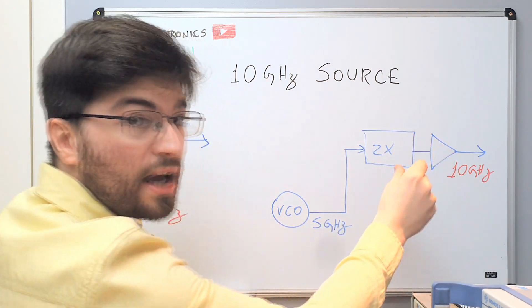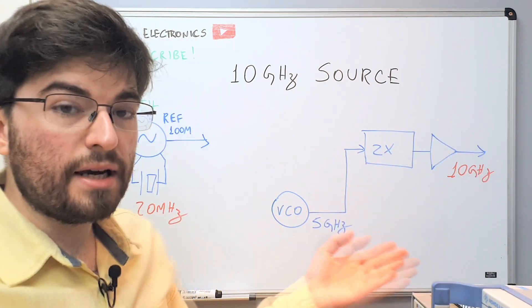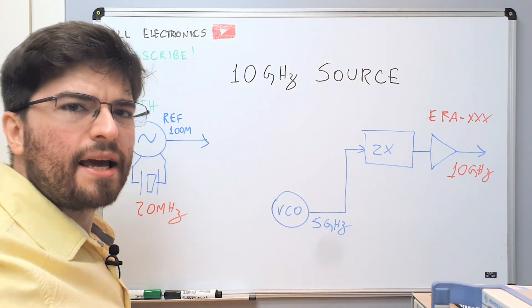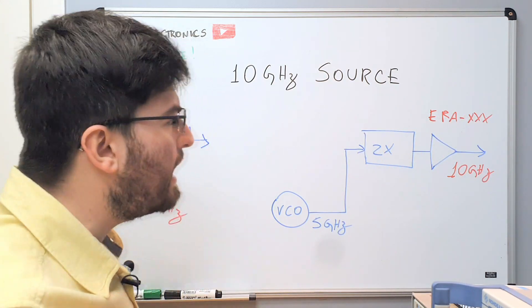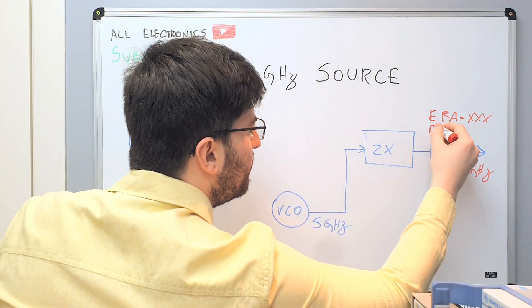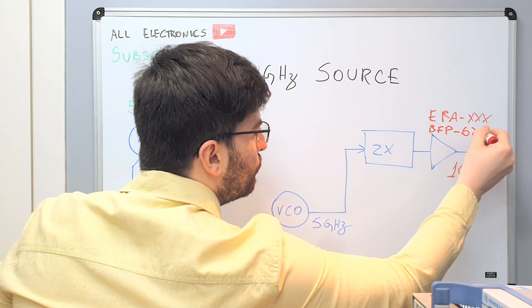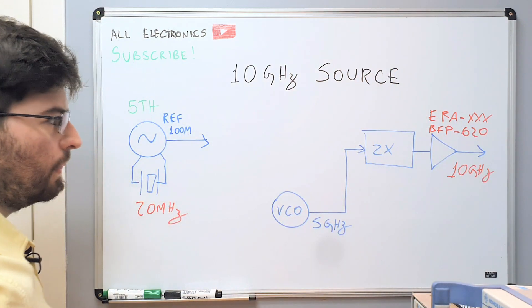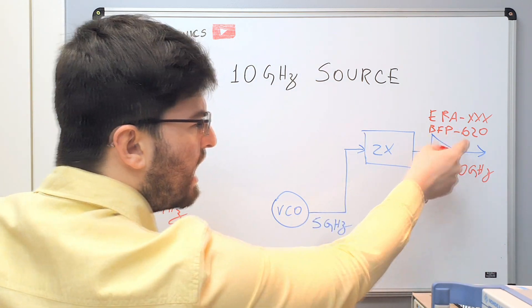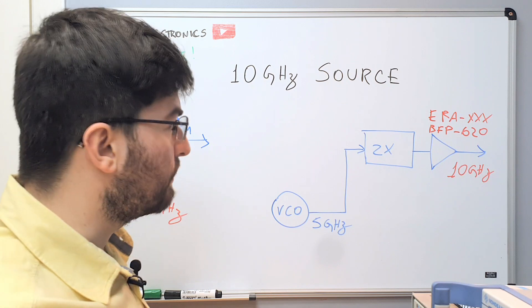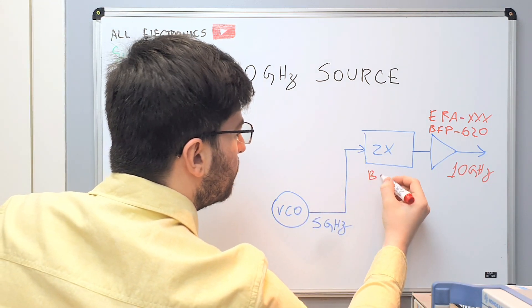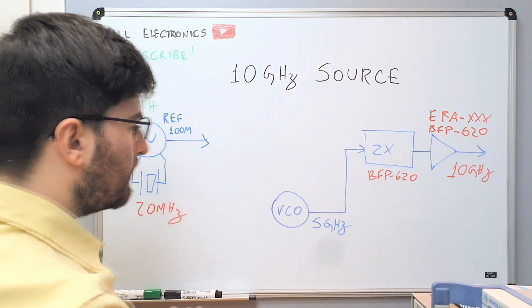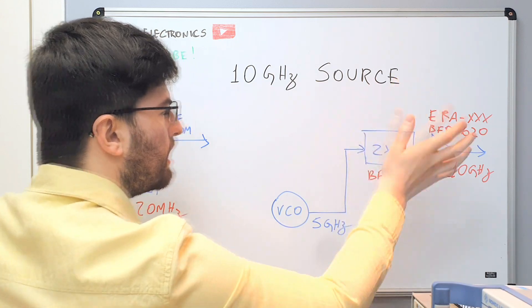This amplifier needs to have a very good output match to the 50 ohm load because 10 GHz is a very high frequency. Small distances are significant transmission lines that need to be well-matched. This can be an integrated amplifier, like an ERA amplifier, or probably, as we like here in electronics, discrete design. We are probably trying to make an amplifier using a BFP620, that has plenty of transition frequency to amplify a 10 GHz signal. This transistor, if I'm not mistaken, has 45 GHz of transition frequency. Probably here the doubler will also be made with a BFP620.